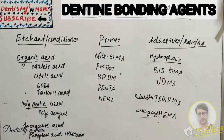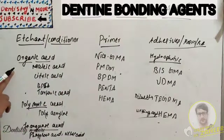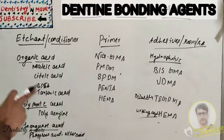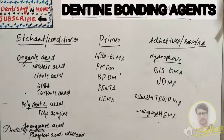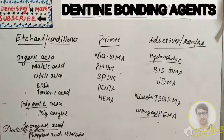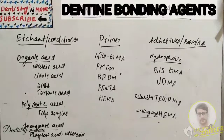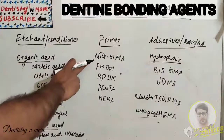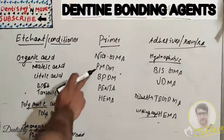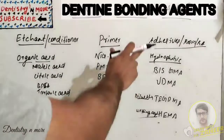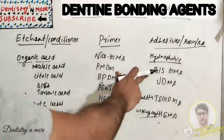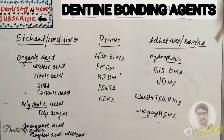The common etchants: in inorganic acids we have malic acid, citric acid, EDTA, and tartaric acid. In polymeric acids we have polyacrylic acid. In organic acids, most commonly used are phosphoric acid and nitric acid. As primers we have NTG-GMA, PMDM, PPDM, Penta, and HEMA. For adhesives, the most commonly used are BisGMA and UDMA, then the diluent TEGDMA and wetting agent HEMA.